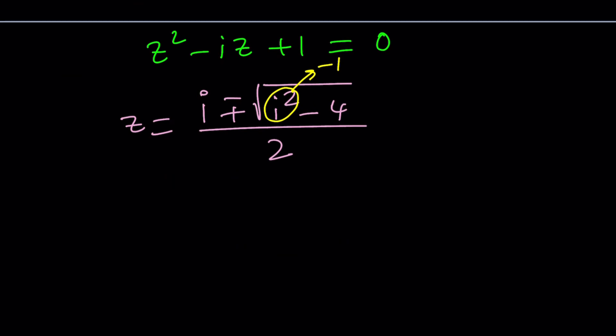So i is i. So we're not going to replace i with anything. And this is going to give us the square root of negative 5 under the radical. So it's going to be imaginary. We're going to write it as square root of 5 i.